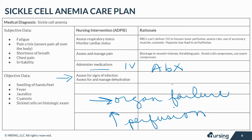Assessing and managing dehydration is so important in sickle cell patients because stress on the organ systems from dehydration can exacerbate the pain of a crisis. Encourage adequate hydration and administer IV fluids to promote adequate blood viscosity.